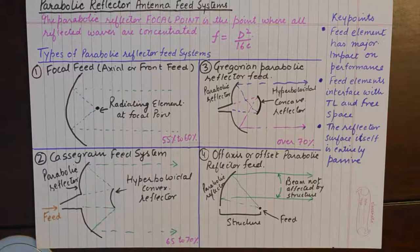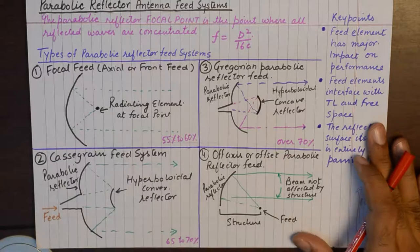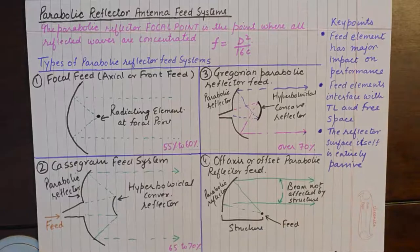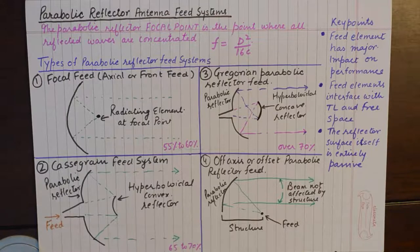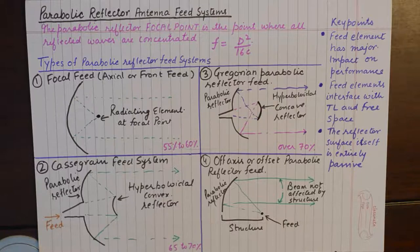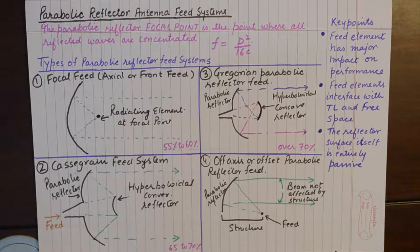Hello internet, welcome to another antenna tutorial. This is the second part of the parabolic reflector antenna tutorial. We are going to study the feed systems for a parabolic reflector antenna. The parabolic reflector focal point is the point where all reflected waves are concentrated, so we place our active element at the focal point. The actual dish or parabolic reflector is just a passive element — it is not the source of radiation; it receives radiation from the feed system.